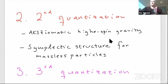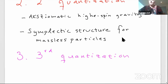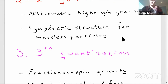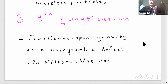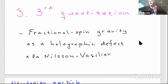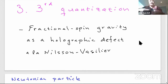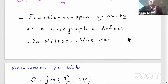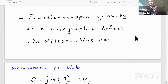The second part switches to second quantization, relying on the axiomatic approach to high-spin gravity. Here I demonstrate how to get a symplectic structure for massless particles — Jordan-Wigner quantization rules — coming from a sigma model derived from high-spin gravity using the AKZ approach. Finally, I'll flash some comments on what I call, in quotation marks, third quantization, where spacetime is thought of as a junction of defects, and holography emerges in a different way.